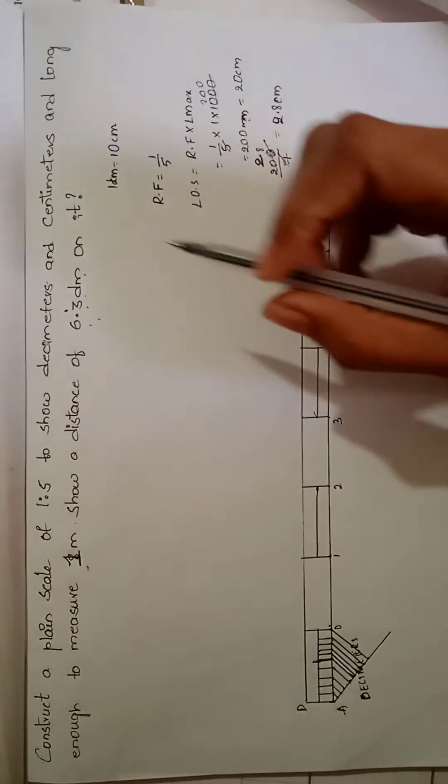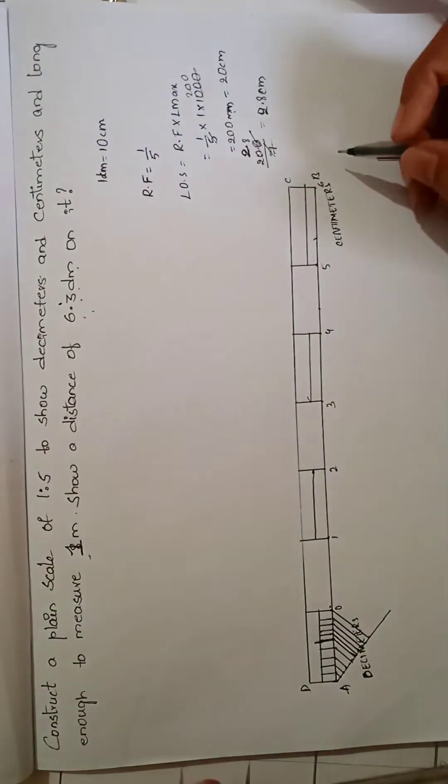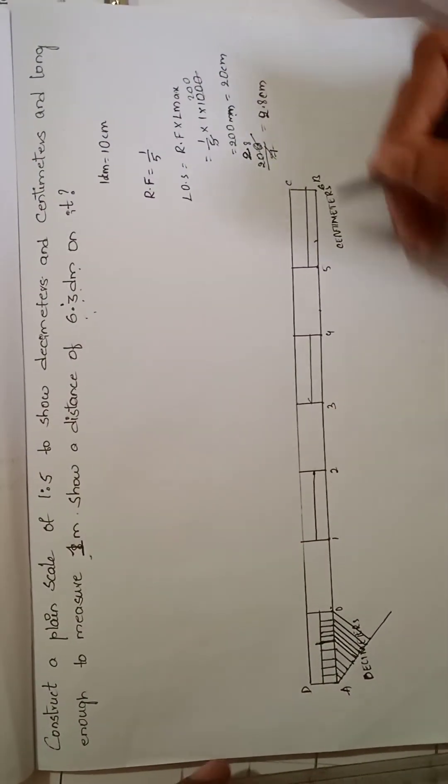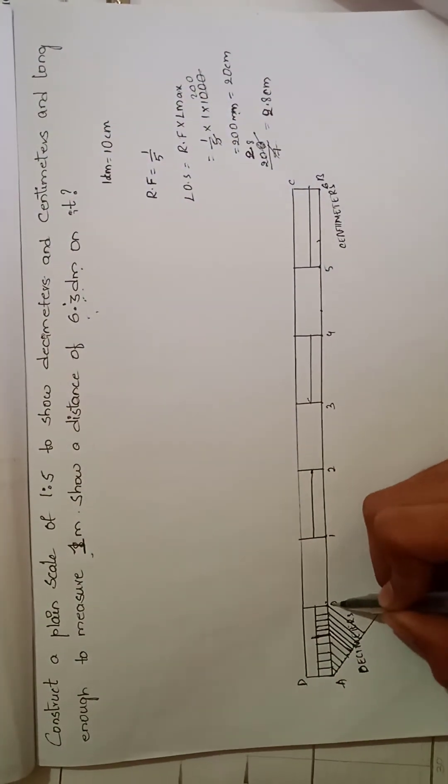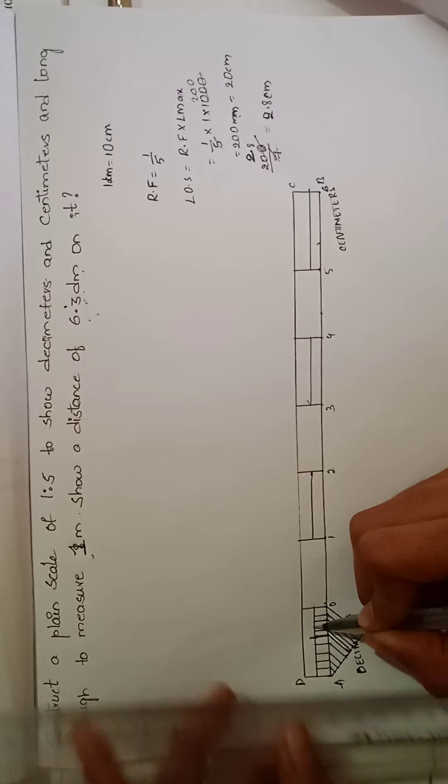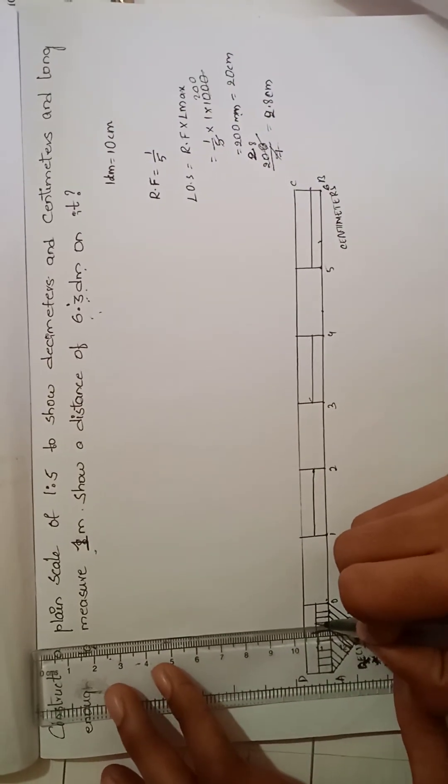Then after that we have to point that 6.3 decimeters. Here we are going to get 6 here, and the decimeters means 3. 0.3 means here: 0, 1, 2, 3. This is 3 and this is 6. We have to mark this like this.